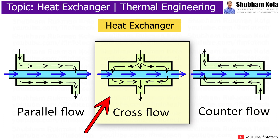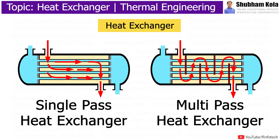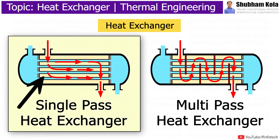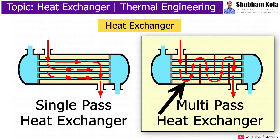In cross flow heat exchangers, one medium flows perpendicular across the other. An efficient way of increasing heat exchanger efficiency is to bring the flowing medium in contact with each other several times. When one flowing medium passes over the other only once, it is termed as a single-pass heat exchanger. When one flowing medium passes over the other more than once, it is termed as a multi-pass heat exchanger.